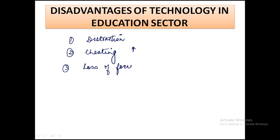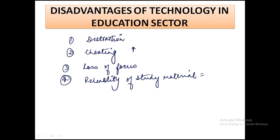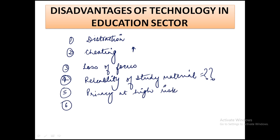Fourth, reliability of study material is always questionable because there is much fake study material present on the internet. We should not fully trust all the study material we find and should always verify and make our own notes. Fifth is privacy — privacy is always at higher risk when we use technology in our education sector. Sixth is health issues — students who spend more time on screens always get health issues like obesity as well as eye strain.